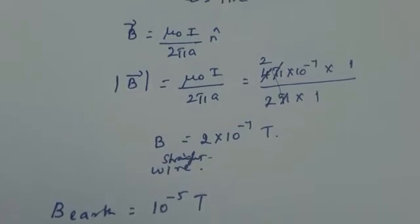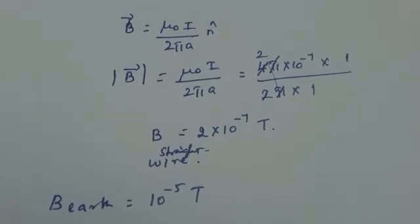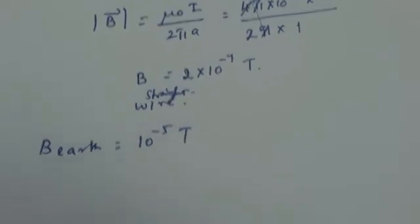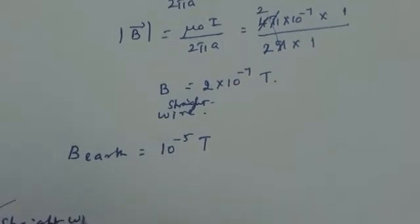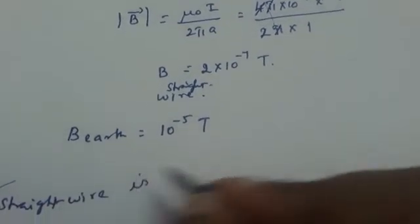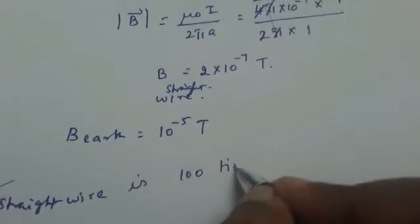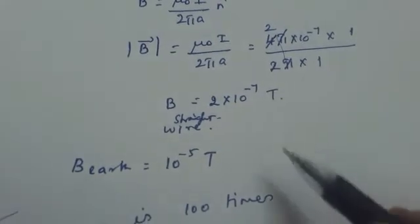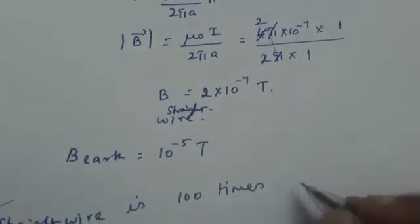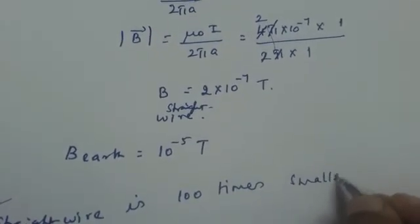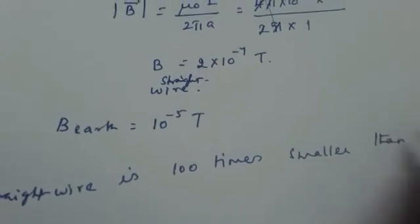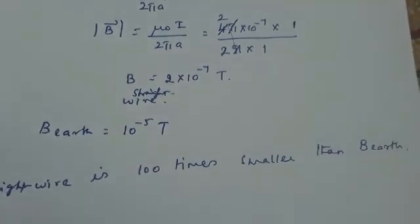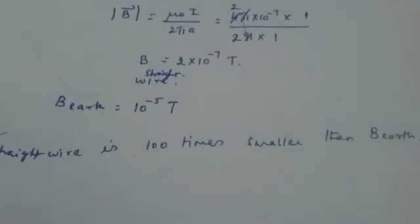the straight wire is 100 times smaller than the earth. The magnetic field due to a straight wire is 100 times smaller: here it is 10⁻⁵, here it is 10⁻⁷. This is a smaller value, 100 times smaller than B_earth. So we have compared it with that of earth.